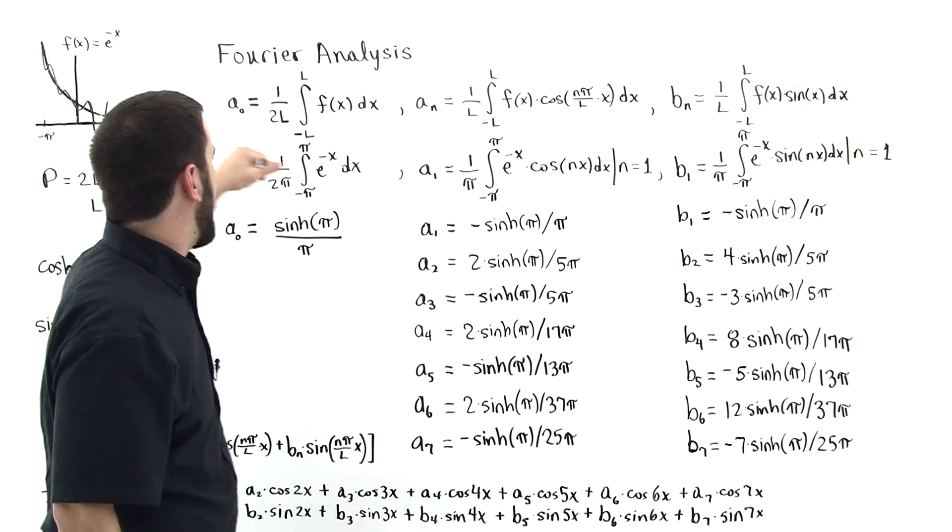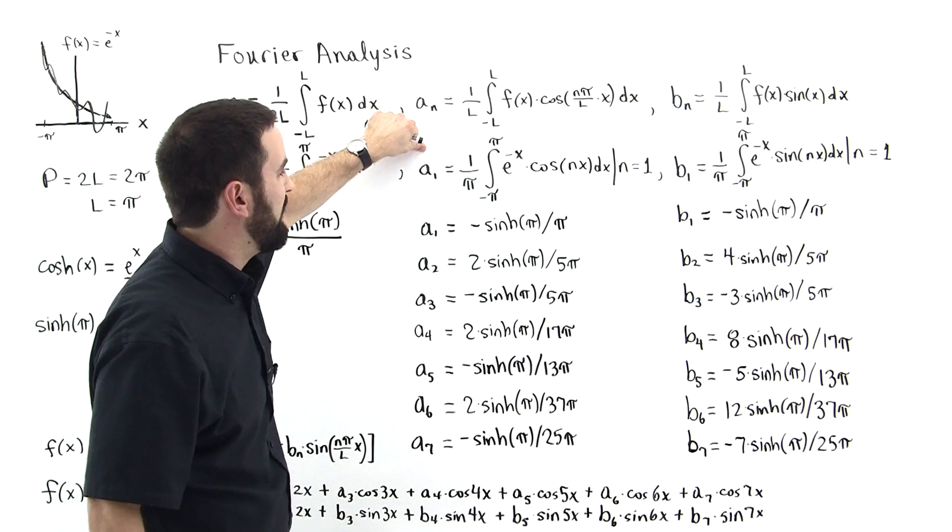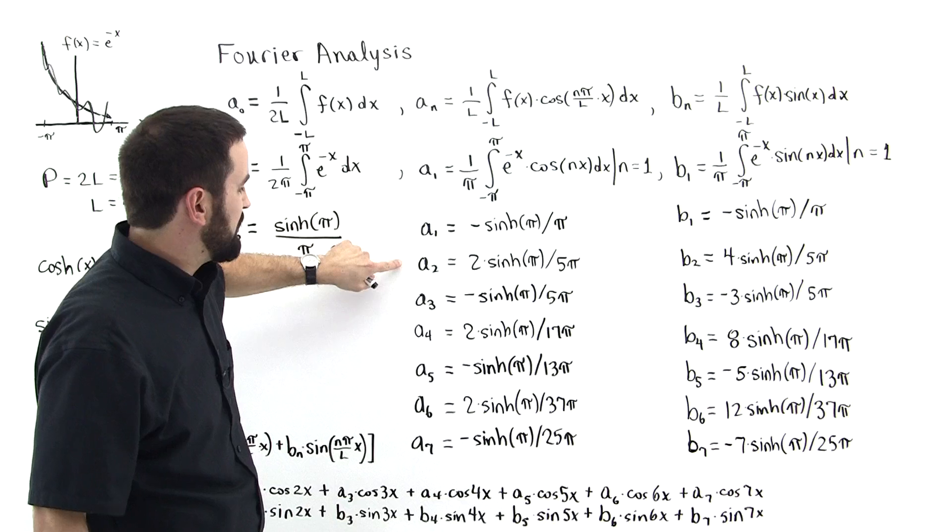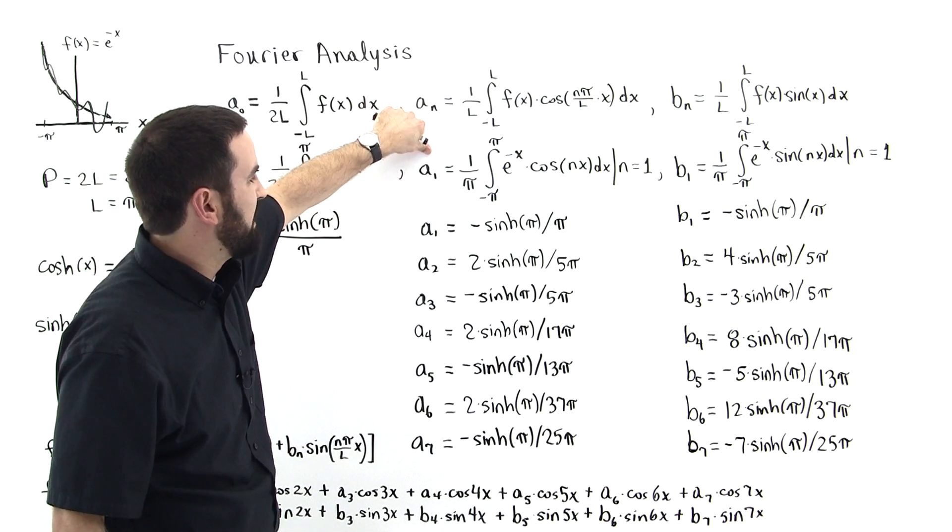I just used for a1, a0 is obviously this is just the constant term. But then for a1, we have a1, a2, a3, a4. And all I did was input this equation here into my calculator.